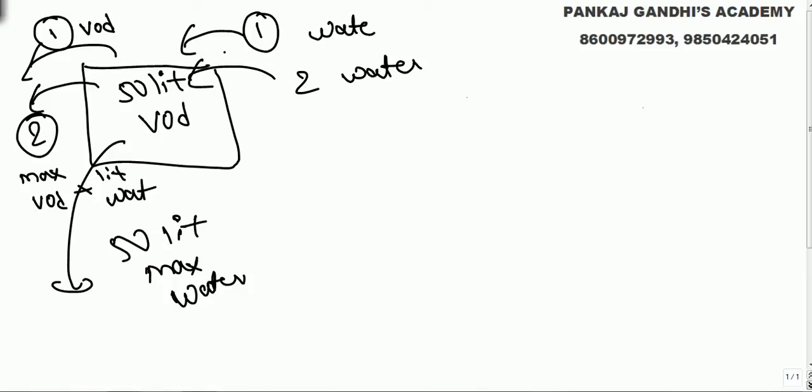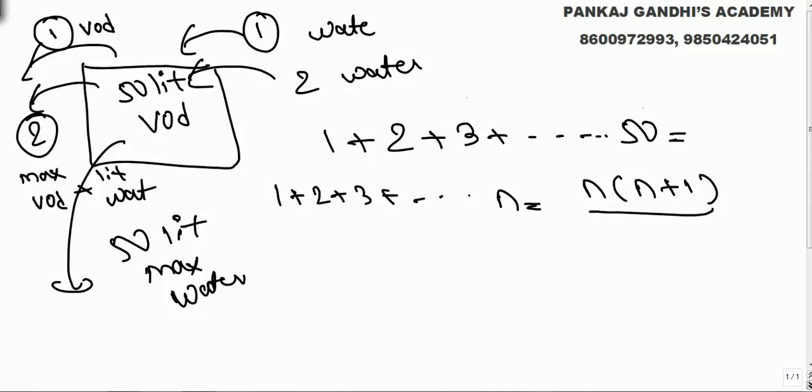Question is did he ever add vodka in the mixture, no. First day he took out 1 litre added 1, he drank 1, next day he drank 2, next day he drank 3 and last day he drank 50. What we all know is 1 plus 2 plus 3 up to n, summation is n into n plus 1 by 2.